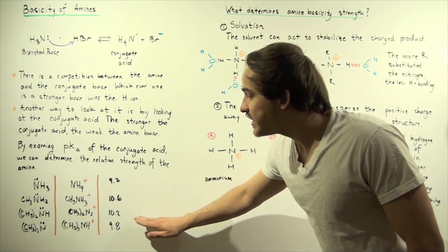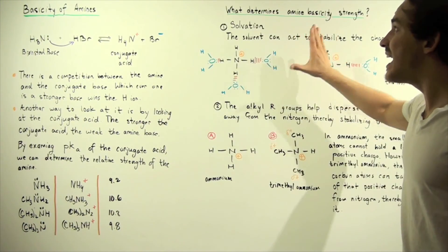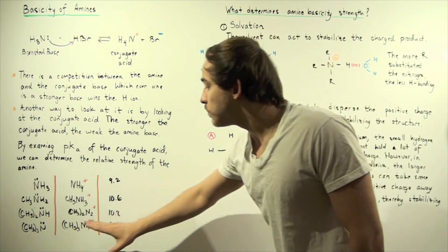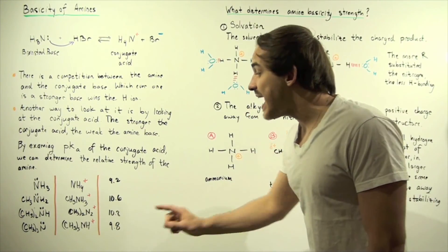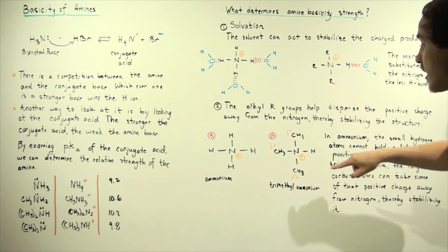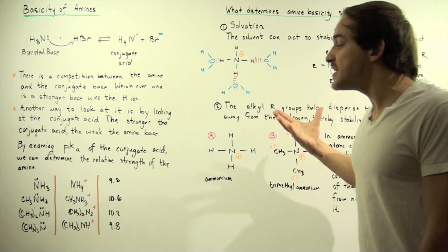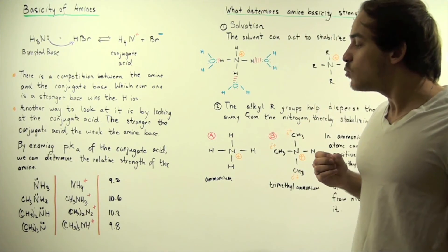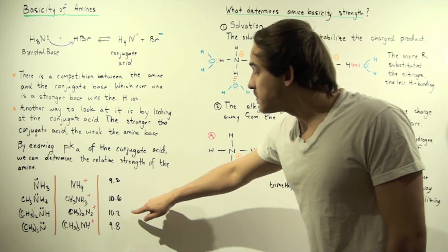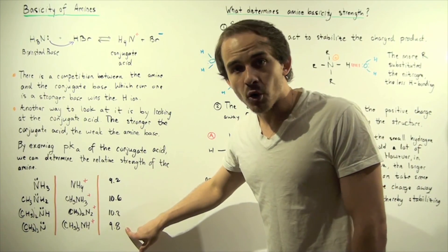As we go to the last entry — the tertiary amine — our solvent is not able to stabilize the product as well because we have no N–H bonds available. But we do have three methyl groups, meaning the charge is fully dispersed. That is exactly why the pKa drops from 10.8 to 9.8.